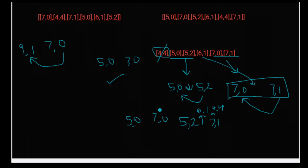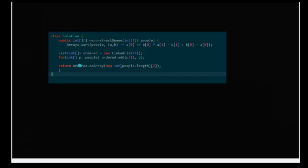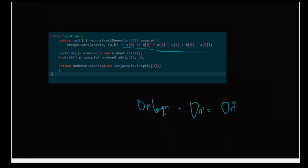The algorithm is: sort using those parameters, then add each element to a linked list or ordered list at position k. Sorting takes O(n log n), and insertion into the list takes O(n²) in the worst case, so the overall time complexity is O(n²). I hope the solution is clear — it was a tricky one. If you have any queries, please let me know. Thank you, keep following!